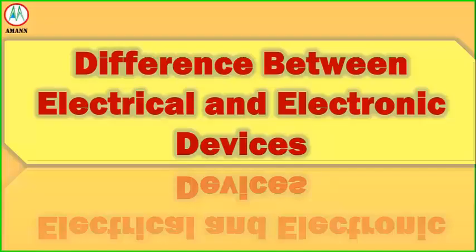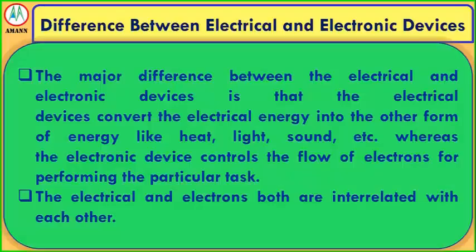This is the difference between electrical and electronic devices. The major difference is that electrical devices convert electrical energy into another form of energy like heat, light, sound, and others, whereas electronic devices control the flow of electrons for performing a particular task.